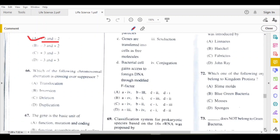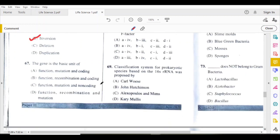Which of the following chromosomal aberration is crossing over suppressor? Inversion is the crossing over suppressor. The gene is the basic unit of function, recombination and mutation. D is the answer.